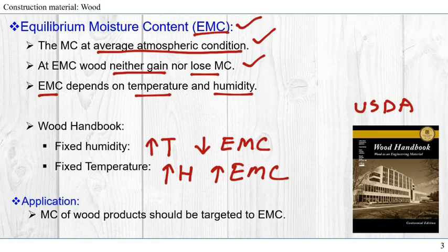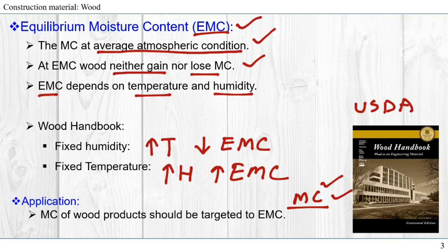So what is the application of moisture content and equilibrium moisture content? If we have a wood and we know its moisture content, our target would be to bring the current moisture content to EMC so that it doesn't gain or lose weight and it doesn't shrink or swell, so the product remains in a stable condition.